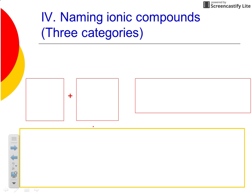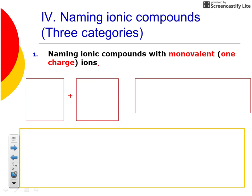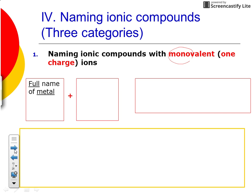Let's look at how we name ionic compounds. There are three categories, or three types of ionic compounds you'll run into. The first type contains monovalent ions, or ions with only one charge. These are your representative elements, groups 1A through 8A, and also zinc and silver. They have only one possible charge.